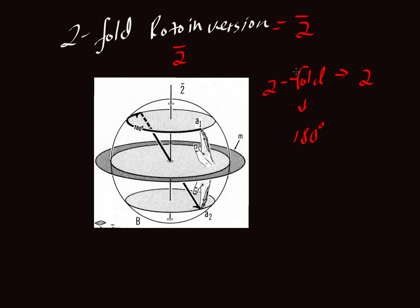When we have a two-fold rotoinversion, we're not done. We're going to add an element of inversion. So in this diagram here, there's an inversion point. We'll label it I. In this diagram by Bloss, A1 is our starting motif. Our motif is a hand.